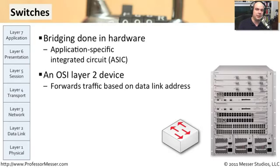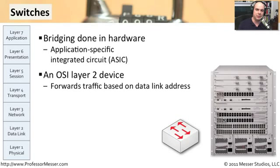They decide where traffic goes based on the data link control address of a device. Most of the time on an Ethernet network, that's the MAC address — the network card address of the different devices. So there's a big table inside of these machines that understands exactly everybody who's plugged into this device. Whenever it needs to decide which way packets go, it looks at the destination MAC address, references back the big table of lists, and says that particular device is on port 7, so it sends the traffic over to port 7.